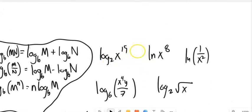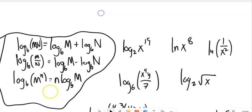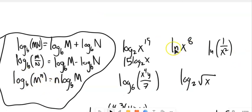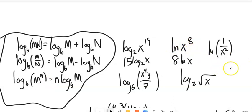Log base 2 of x to the 15th: applying the power rule, that becomes 15 times log base 2 of x. Same thing for natural log — that's just a log statement — so this would become 8 times the natural log of x.